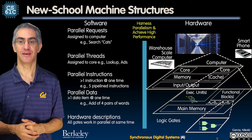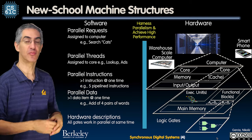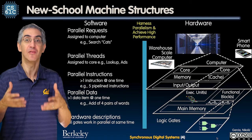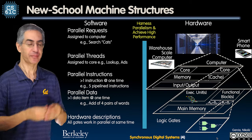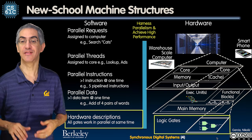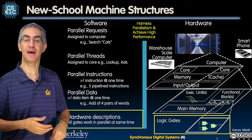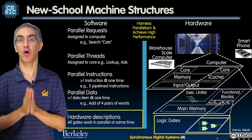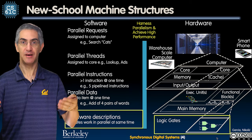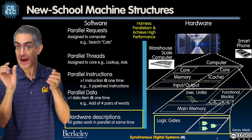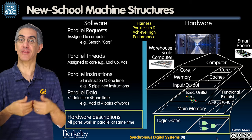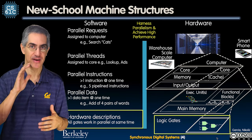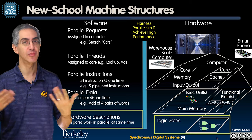New school machine structures is a little more complicated. You've got a warehouse scale machine broken up into computers, and that computer has multiple cores. In one of those cores you have a processor — execution units, functional units, memory — and within that are the logic gates. We're going to teach you the first type of parallelism, which is parallel hardware descriptions. When you say bitwise AND of A and B, 32 parallel AND gates operate and produce another 32 bits — a 32-wide bitwise AND gate. As operations get more complicated, we'll teach you how to build them in this series of lectures.